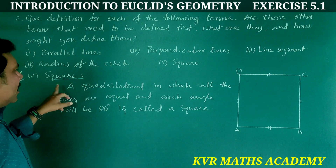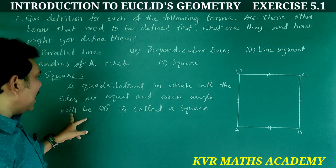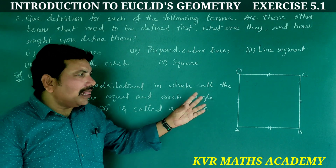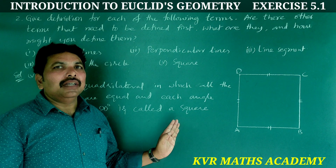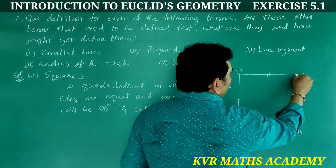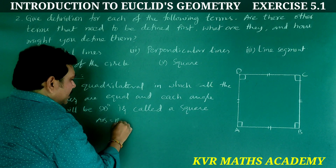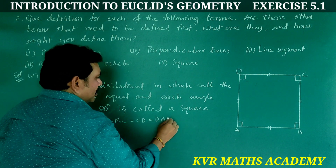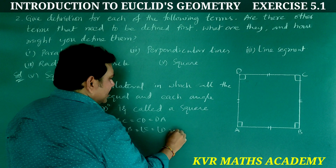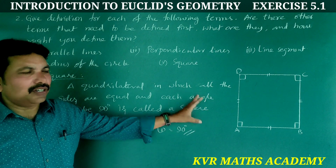Fifth term: square. A quadrilateral in which all the sides are equal and each angle is equal to 90 degrees is called a square. Here, AB = BC = CD = DA, and angle A = angle B = angle C = angle D = 90 degrees — this is called a square.